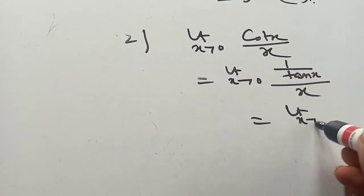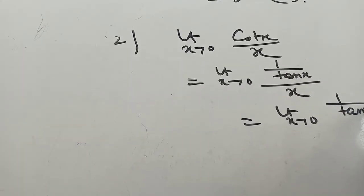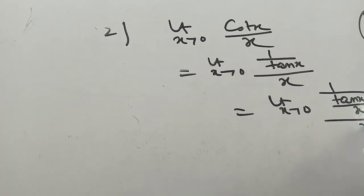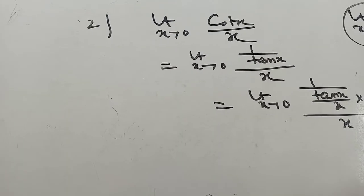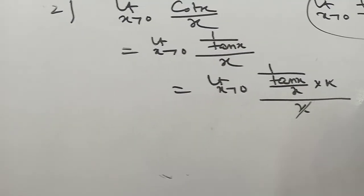Limit as x tends to 0, 1 by tan x, by x, times x by x. This x and this x cancel.